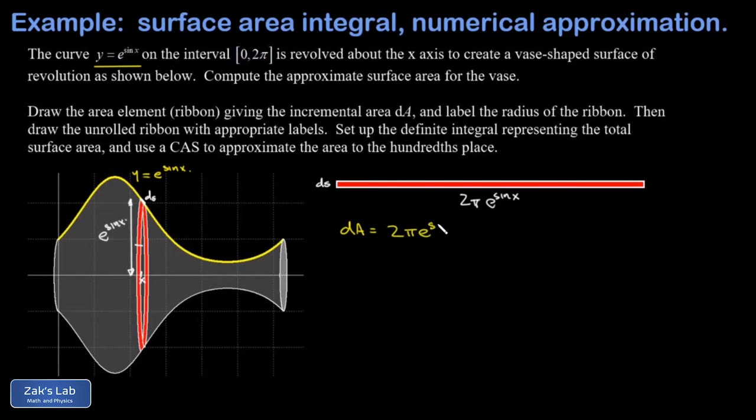Now ds has to be expressed in terms of x. A small arc length contribution is given by the square root of 1 plus the square of the derivative, times dx. So we need to find the derivative of our function and then square it.